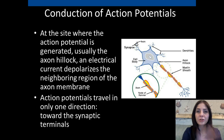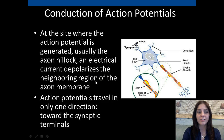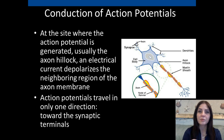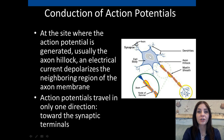I'm going to conclude everything by talking about the conduction of the action potentials across the axon, or along the nodes of Ranvier. At the site where the action potential is generated, usually the axon hillock, an electrical current depolarizes the neighboring region of the axon membrane. The action potentials then travel in only one direction, towards the synaptic terminal, or the axon terminus.